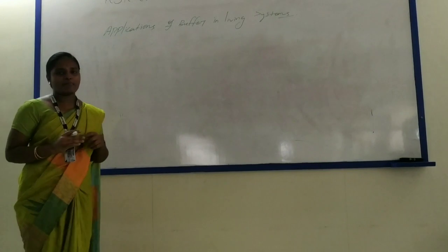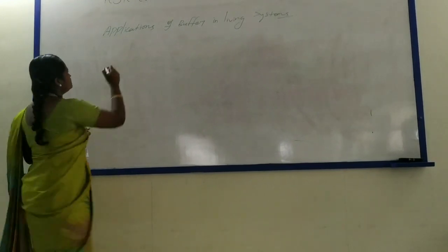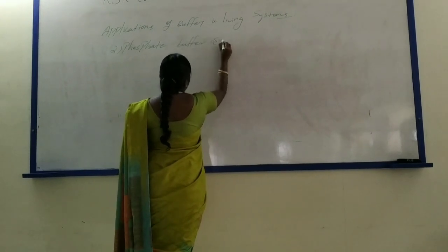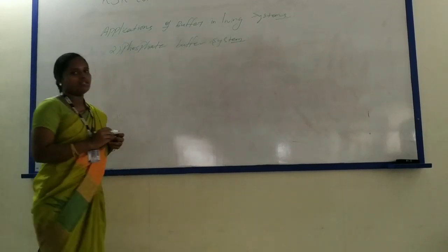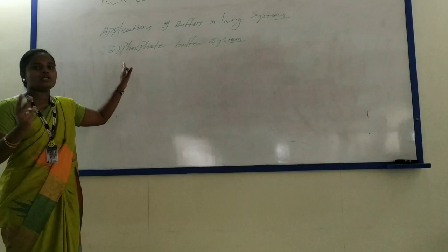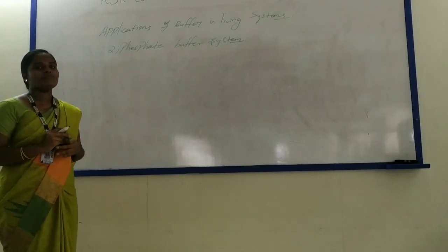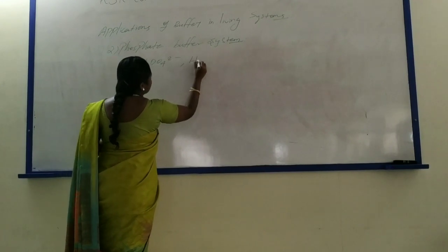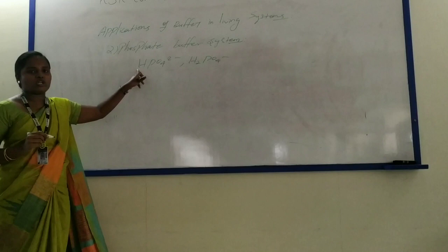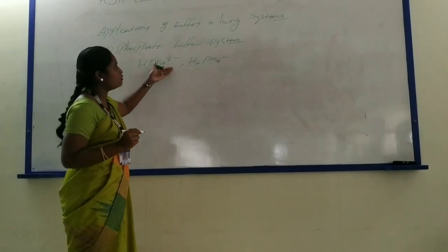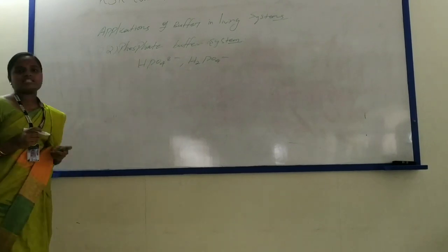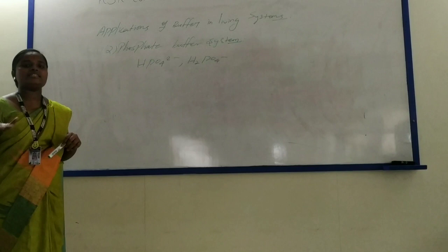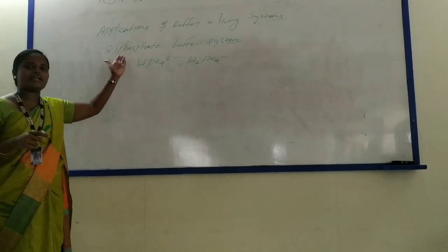Next, we move on to the second application: the phosphate buffer system. It contains two compounds, similar to the bicarbonate buffer system. One is hydrogen phosphate ions and the other one is dihydrogen phosphate ions. These two in combination make the phosphate buffer system. This buffer system is used to regulate the pH level of body cells. If the acidity or basicity increases in our cell system, the phosphate buffer is used to regulate the pH level.